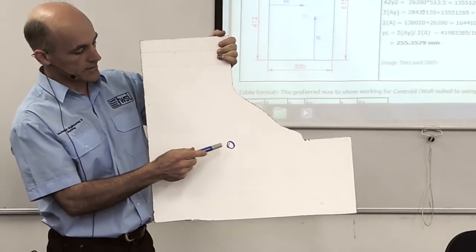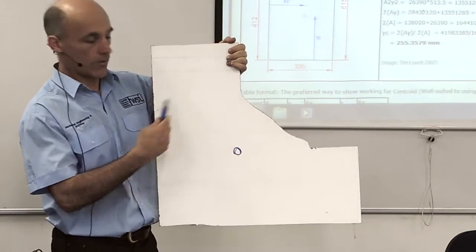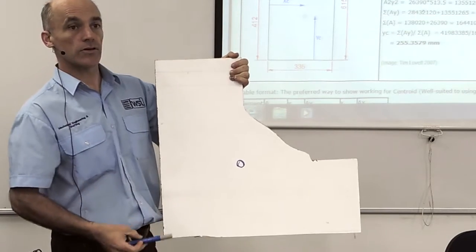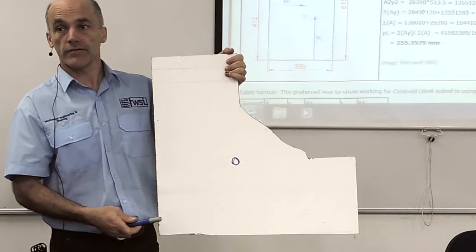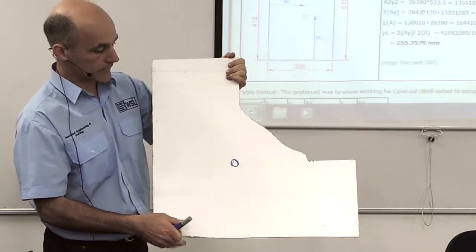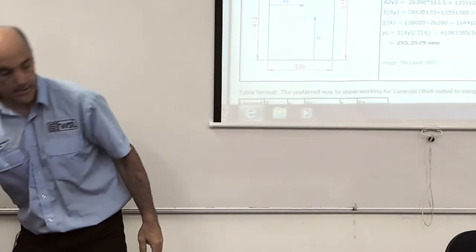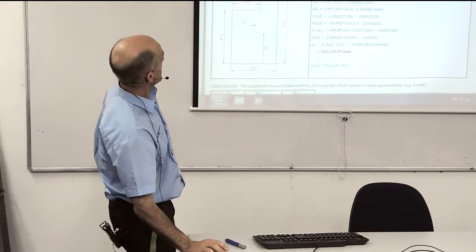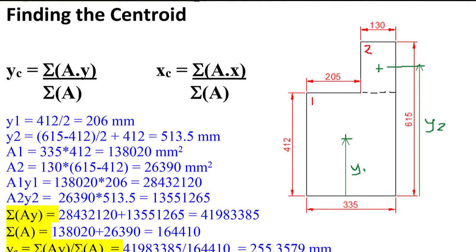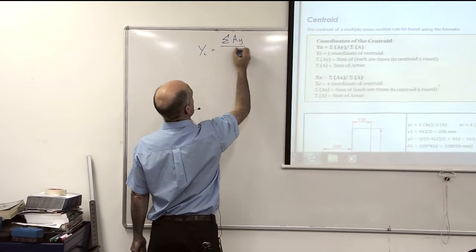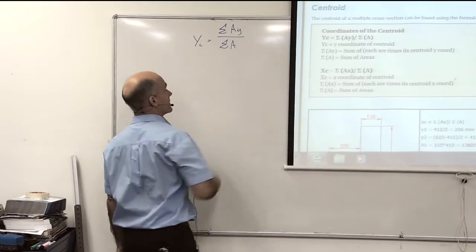We have to first calculate the centroid of the cross sectional shape, and then use this to determine how we add up our second moment of area to get the total second moment of area. Finding the centroid is the first job. Here's the formula - it's given the symbol C, and it's the sum of all the area times Y, over the sum of all the areas.